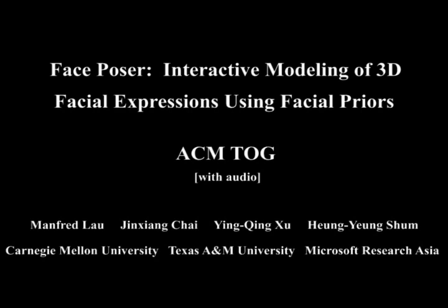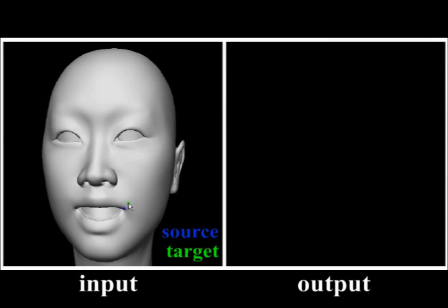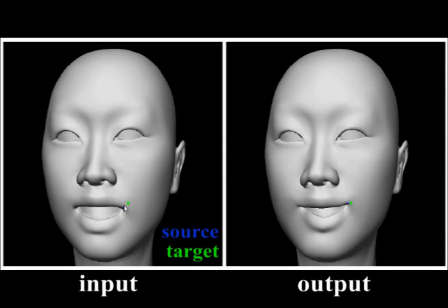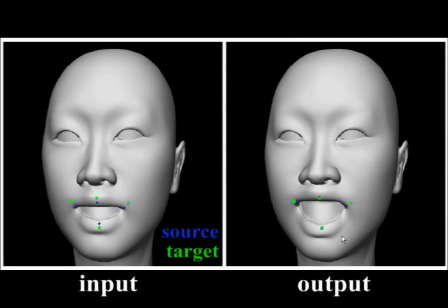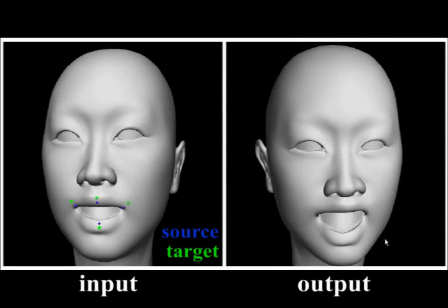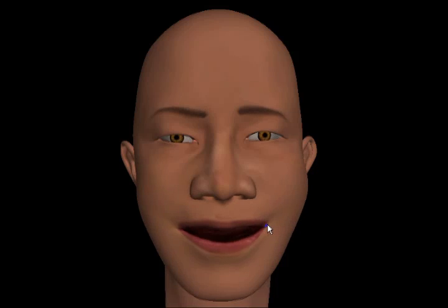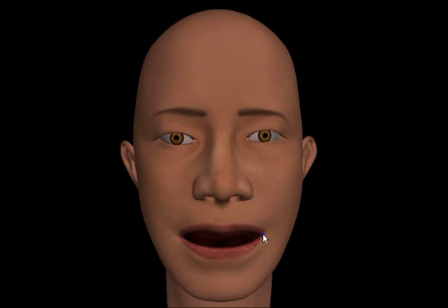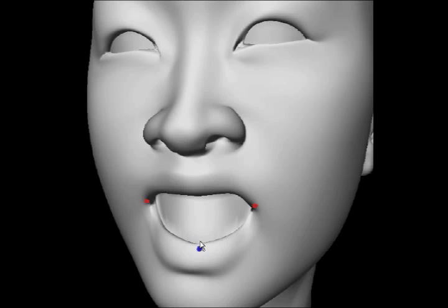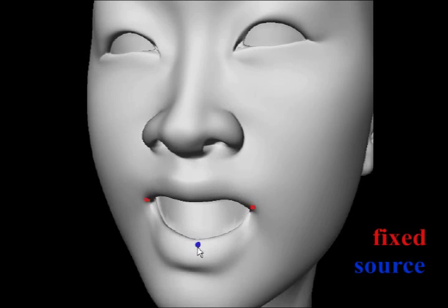This paper presents an intuitive and easy-to-use interface for modeling and editing 3D facial expressions. Point constraints allow for more detailed control of the expression. We can select points on the mesh and then choose where we want the points to go in the 2D screen space. We can also interactively drag the 3D points in screen space. Combining multiple point and fixed constraints allows for regional control of the editing process.